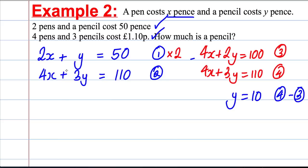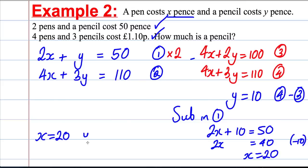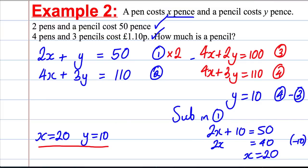Y equals 10. Substituting back into equation 1: 2x plus 10 is 50, so 2x is 40, and x equals 20. Our solution: x is 20, y is 10. Let's check: 2 times 20 is 40, 40 plus 10 is 50. Four times 20 is 80, 3 times 10 is 30, 80 plus 30 is 110, which is £1.10. We're correct.